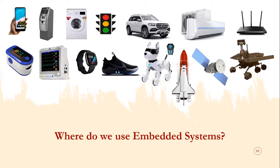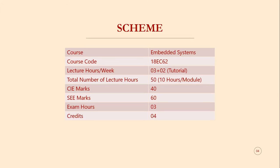Embedded systems may be independent systems or part of a larger system. For example, in automobiles there may be multiple embedded systems — such as a headlamp controller, wiper controller, steering control, or ABS (anti-braking system) — all forming part of a larger system.